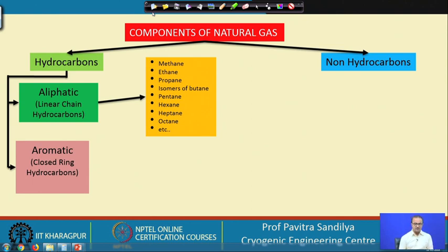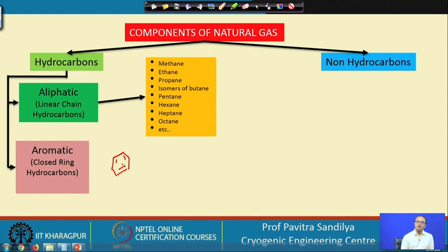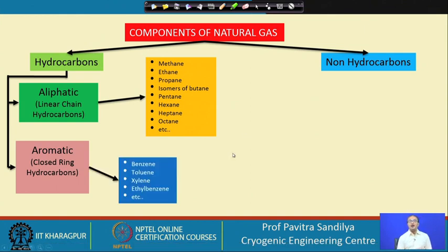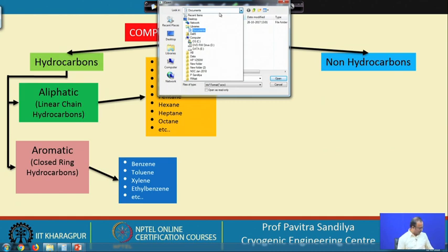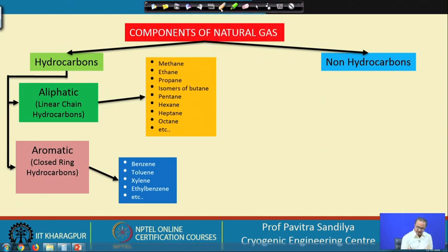The next group of hydrocarbons present in natural gas are aromatics, which are closed-ring hydrocarbons. They have a ring structure — the famous benzene ring structure. Along with benzene we may have some other alkyl groups like toluene or xylene. These three — benzene, toluene, and xylene — are sometimes collectively known as BTX. We may also have ethylbenzene, that is C2H5 and C6H5.